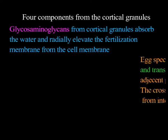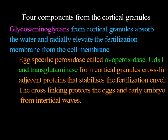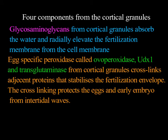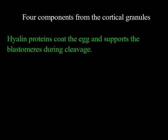Egg-specific peroxidases called ovoperoxidase, UDXI, and transglutaminase from cortical granules cross-link adjacent proteins, which stabilizes the fertilization envelope. This cross-linking protects the eggs and early embryo from intertidal waves. The hyaline proteins coat the eggs and support the blastomeres during cleavage.